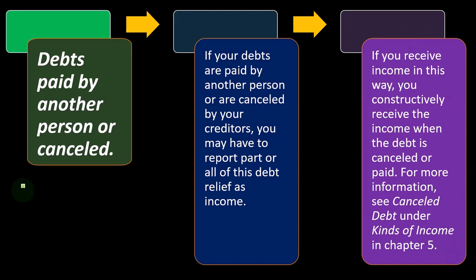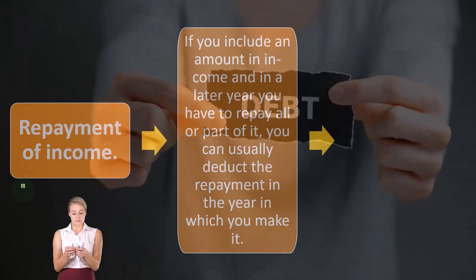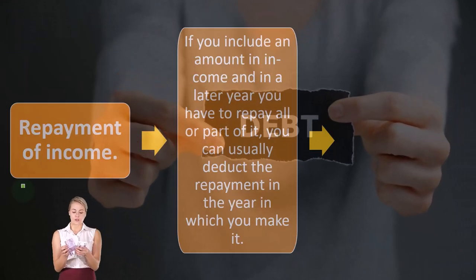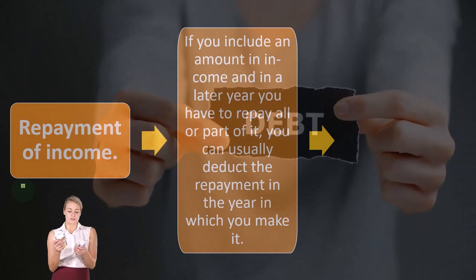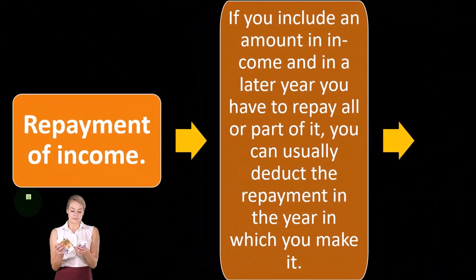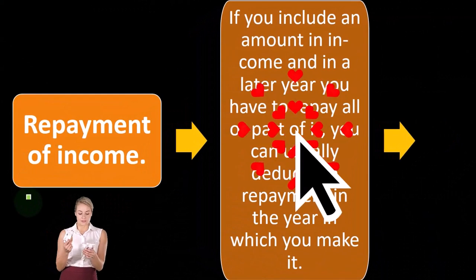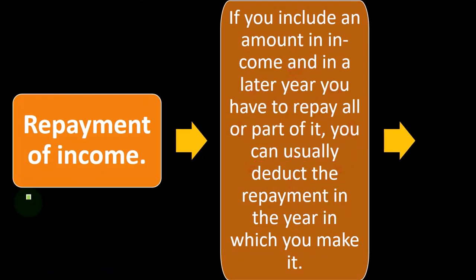For more information, see canceled debt under kinds of income in chapter five. There might be exceptions — remember, there are PPP loans and government loans and situations where people are insolvent. But the default position is that if a debt was canceled, it would be included as income unless there's some exception to the rule.